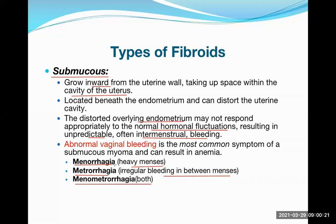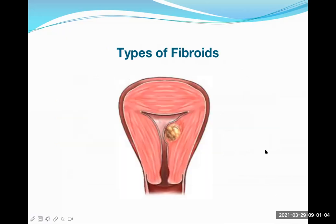How does the lady present? She will say she is passing a lot of clots — clot passage indicates heavy bleeding, which is never normal in normal menstruation. Another sign is bleeding for more days than normal — for example, if the average is four days, she may bleed for six or seven days. That is also considered part of menorrhagia. This is submucosal fibroid — right below the mucosa or endometrium.